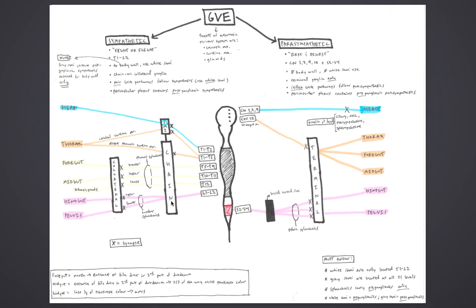Hindgut and pelvis are served by the lumbar splanchnics coming from L1 and L2. L1 forms mostly the upper lumbar splanchnic, which serves the hindgut, while L2 forms mostly the lower lumbar splanchnic, which serves the pelvis. There are also sacral splanchnics, but these are outside the scope of this video.